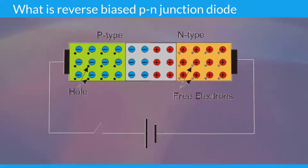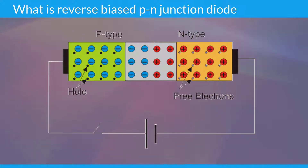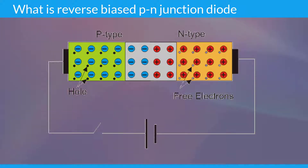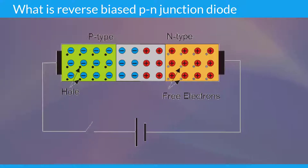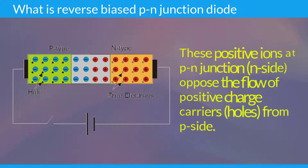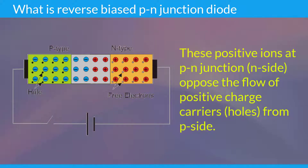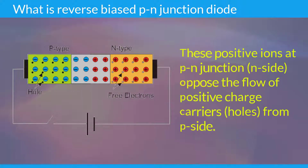On the other hand, holes are positive charges which begin their journey at the positive terminal. They find large numbers of free electrons at the N type semiconductor and replace the electrons' positions with holes. The atom which loses an electron becomes a charged atom or positive ion. These positive ions at the PN junction N side oppose the flow of the positive charge carriers, that is holes, from the P side.